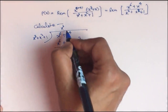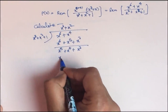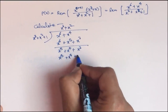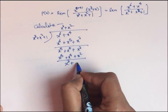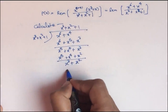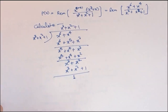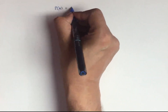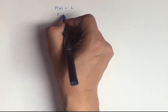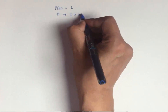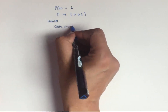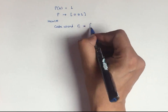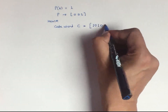Now we multiply by x squared to get x to the power 5 plus x to the power 4 plus x squared, leaving remainder x cubed plus x squared. Then multiplying by 1 gives x cubed plus x squared plus 1, so the remainder is simply 1. The code polynomial p(x) equals 1, meaning the parity check bits will be 0 0 1. Hence the code word c is 1 0 1 0 0 0 1.